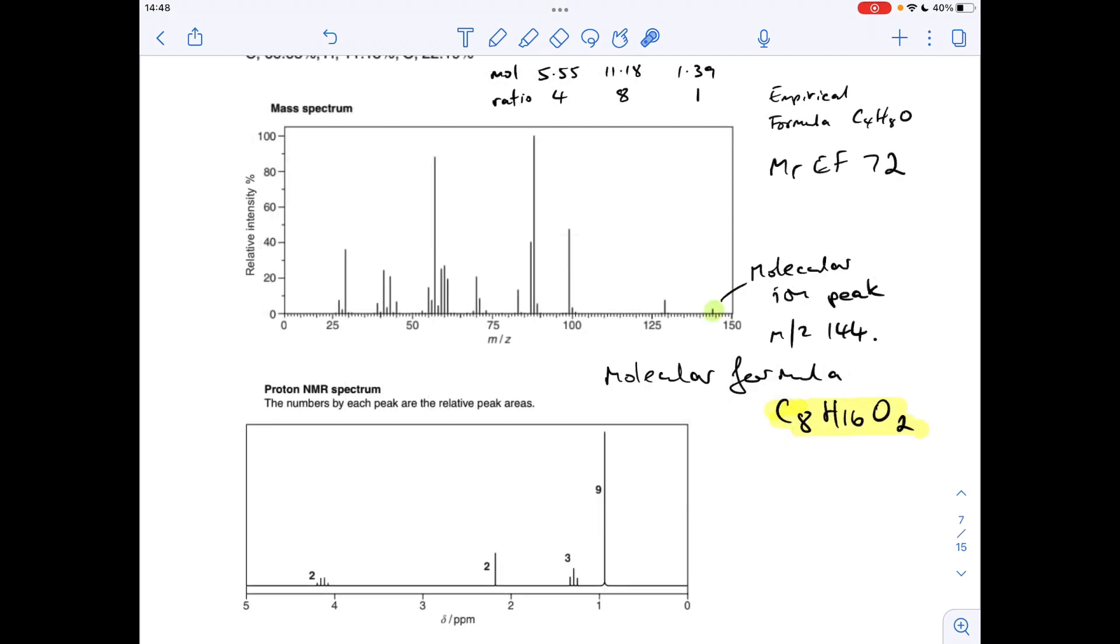So now we've established the molecular formula, we're going to go to the proton NMR spectrum, that's where the bulk of the information is, and we're going to take each signal in turn and do the usual thing, talk about the type of signal that we've got, so the splitting pattern tells you what's adjacent, remember. We're going to talk about the peak area, and we're going to talk about the shift value. Remember, this is an ester, so we have this functional group in the molecule.